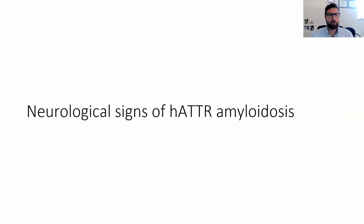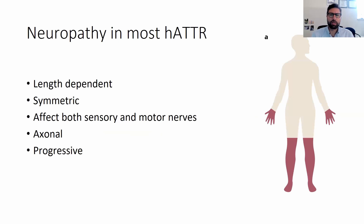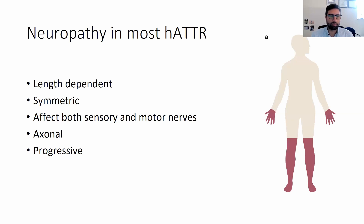What about the neurological signs of HATTR amyloidosis? The neuropathy is typically length-dependent, meaning it starts at the distal part of the limb — mainly the feet. As the disease progresses, it moves more proximally, involving the ankles, calf, knees, and eventually the hands. It is symmetric — both sides are affected to a similar degree. It affects both sensory and motor nerves, and unfortunately it is a progressive neuropathy unless treated.